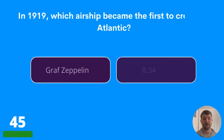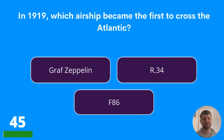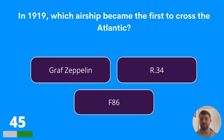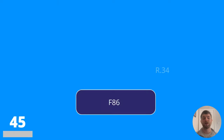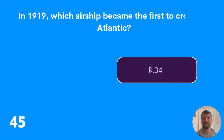Question forty-five: in 1919, which airship became the first to cross the Atlantic? Graf Zeppelin, R34, or F86? The answer is the R34.